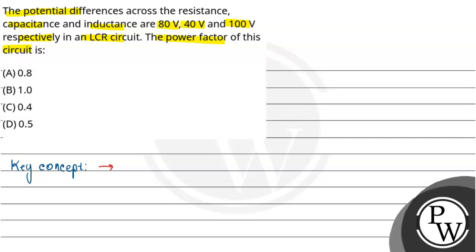Key concept: In case of an AC series circuit, Vrms equals root over Vr squared plus (VL minus VC) whole squared. Here Vr is the potential difference across the resistance, VC is the potential difference across the capacitor, and VL is the potential difference across the inductor.